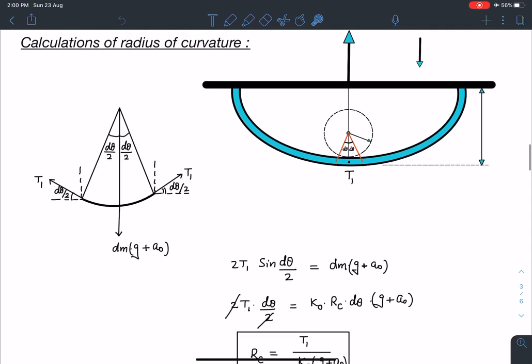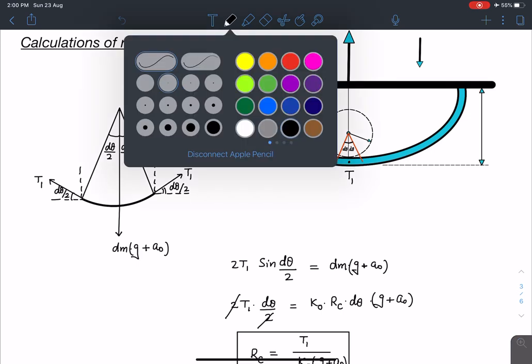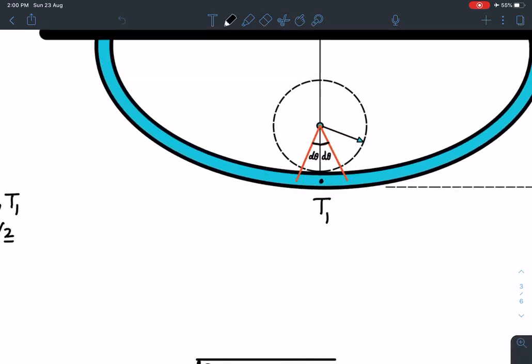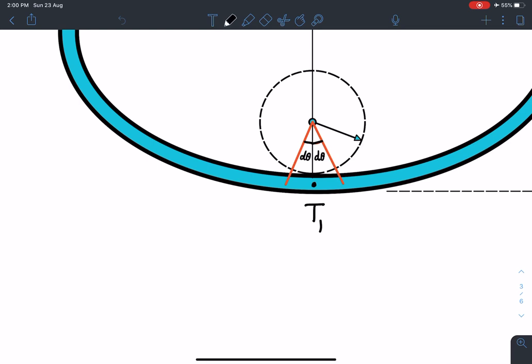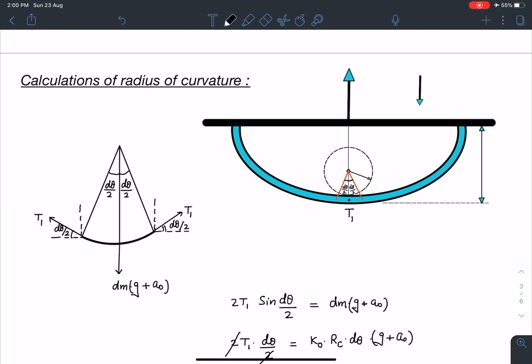When I simplify, dm is radius of curvature rc into d theta. I can definitely write this here. This is d theta by 2. This is also d theta by 2. Here by 2 should come. So I will just make that changes. By 2 should come in this part. So here you can see because earlier I have taken in the calculation by 2. So here also I will prefer writing by 2.